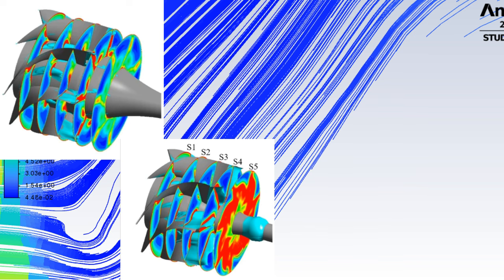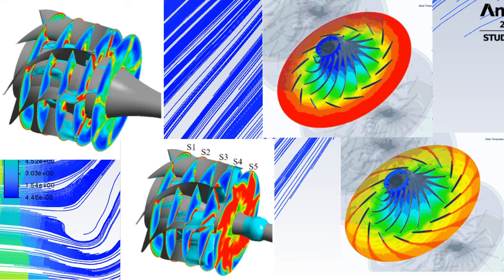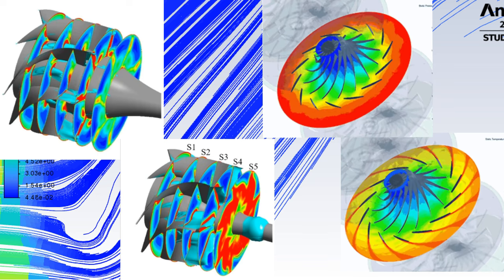Six: thermal efficiency of axial flow compressor is around 94%, and centrifugal compressor is around 85%.